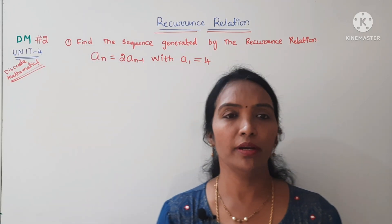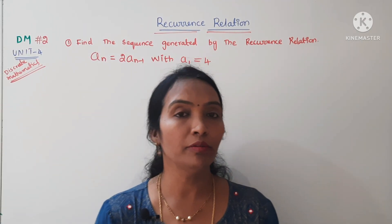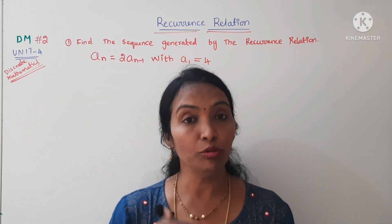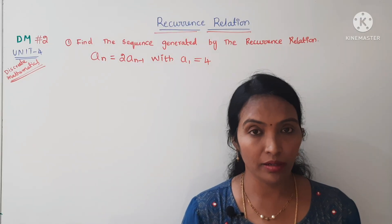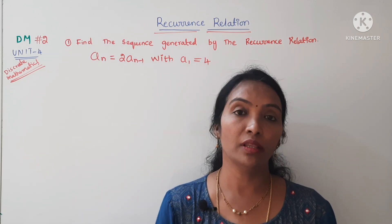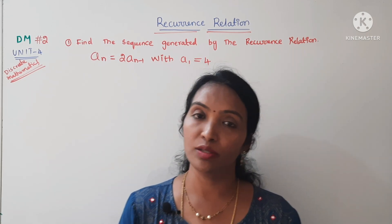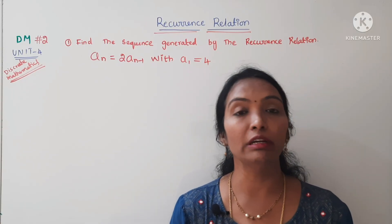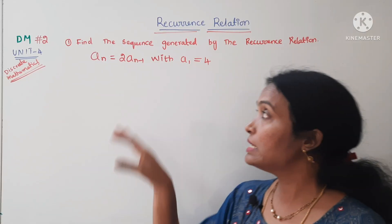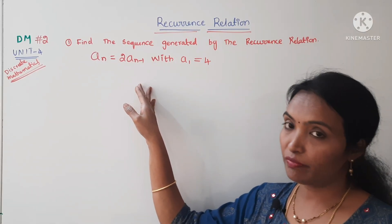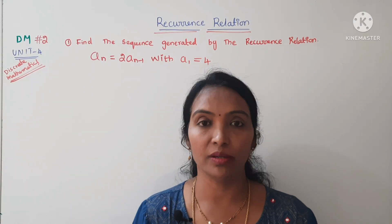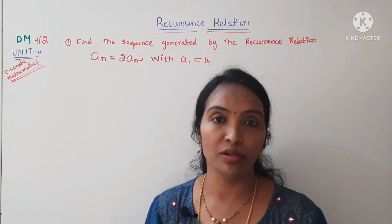Hi all of you, welcome back to Ramareddy Mats Academy. This is the second class in our recurrence relation unit 4 in discrete mathematics. In the first class, what is the recurrence relation, what are the types of recurrence relations, and what are the solutions, the order, and the degree — all of that is available. If you are watching this video for the first time, please watch that video first.